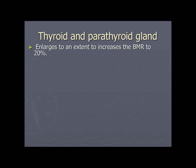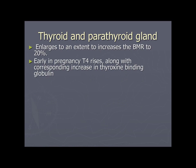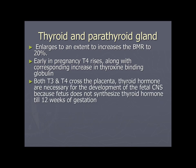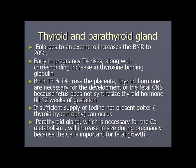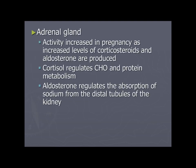Thyroid and parathyroid glands enlarge during pregnancy. The thyroid enlarges, raising BMR by 20%; T4 rises along with increased thyroxine-binding globulin; both T3 and T4 cross the placenta. Thyroid hormones are necessary for fetal CNS development since the fetus does not synthesize thyroid hormone until 12 weeks of gestation. If sufficient iodine is not present, goitre can occur. The parathyroid gland increases in size for calcium metabolism. Adrenal gland activity increases, with elevated corticosteroids and aldosterone: cortisol regulates carbohydrate and protein metabolism; aldosterone regulates sodium absorption from the distal tubules.